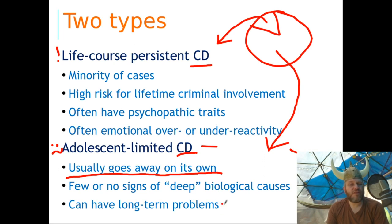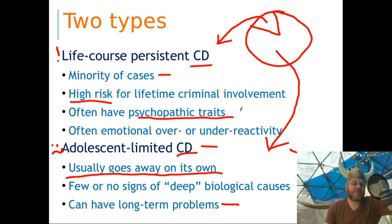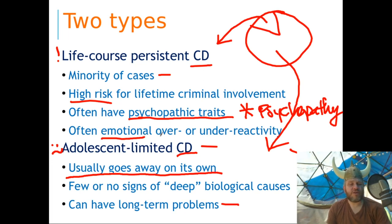Long-term problems from adolescent limited conduct disorder can come from the way the world — including your parents — reacts to you. Life course persistent conduct disorder is the scary kind: pre-psychopath. It's a minority of cases, with a very high risk for lifetime criminal involvement. These people often have psychopathic traits and are much more likely to be diagnosed with psychopathy later on. There's evidence of biological underpinnings — psychopathic traits right from childhood suggest a high chance of biological problems. You often have emotional over-reactivity or under-reactivity in this group.